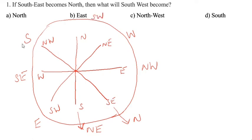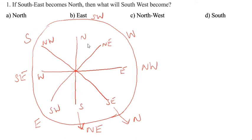You have to write the direction details on the opposite side. South-East comes this side — opposite direction. So East goes this side, West goes this side. This is the trick in this question. South-East becomes North is given. So South-West becomes East. Which one is South-West? South-West becomes East. East is the answer.